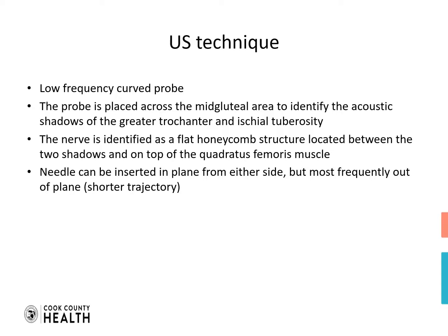Ultrasound technique: low-frequency curved probe. The probe is placed across the mid-gluteal area to identify the acoustic shadows of the greater trochanter and ischial tuberosity. The nerve is identified as a flat honeycomb structure located between the two shadows and on top of the quadratus femoris muscle. The needle can be inserted in-plane from either side, but most frequently out-of-plane for a shorter trajectory.